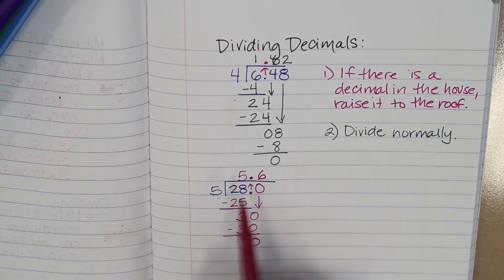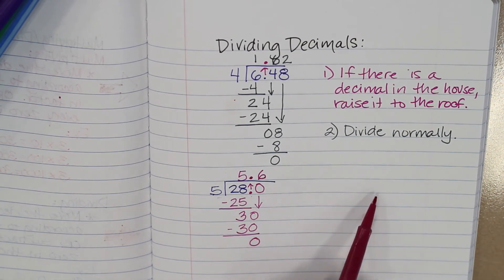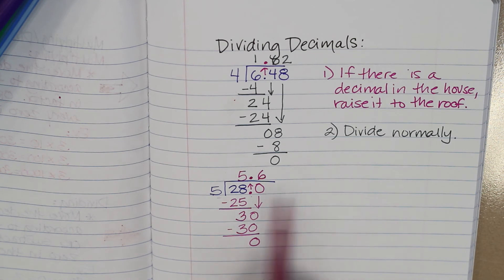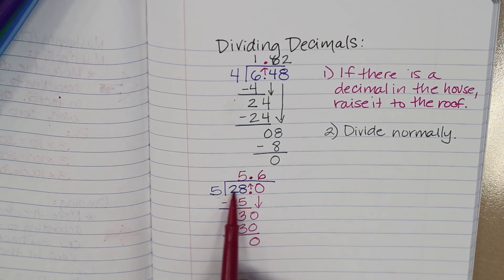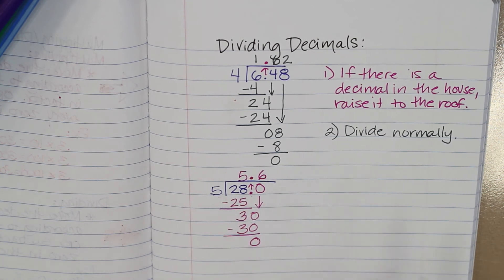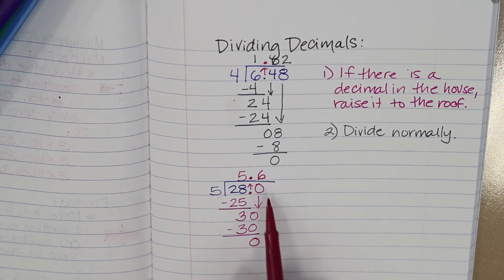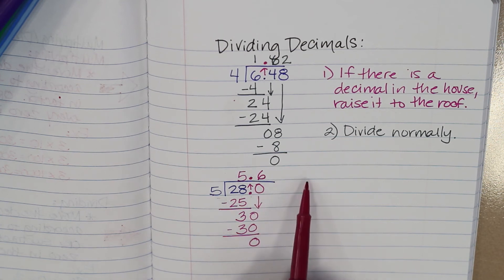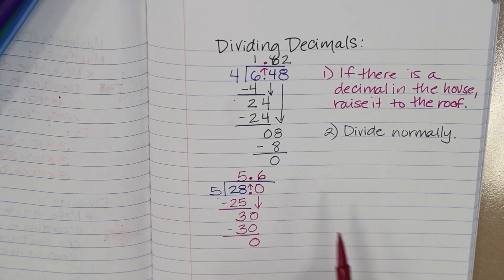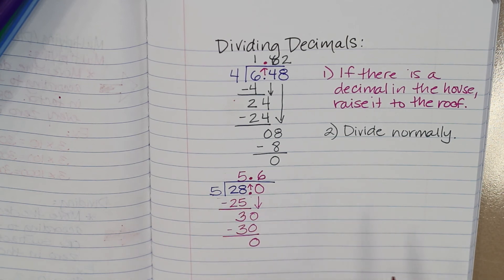You can add zeros to this dividend without changing the number, as long as the decimal is in the right place. If I did have a remainder, I could simply add another zero until I no longer had one. So 28 divided by 5 is 5 and 6 tenths.